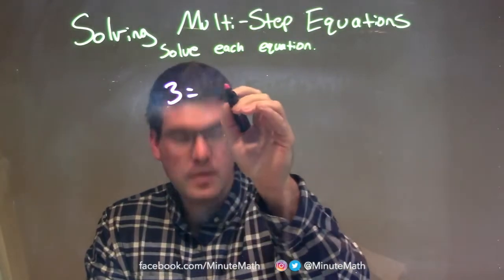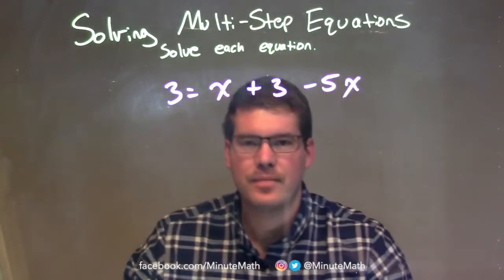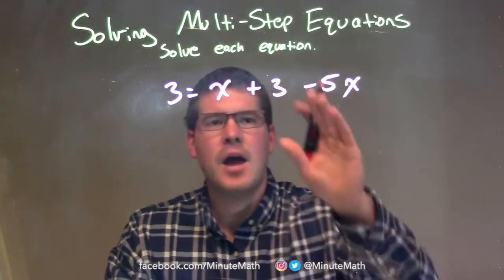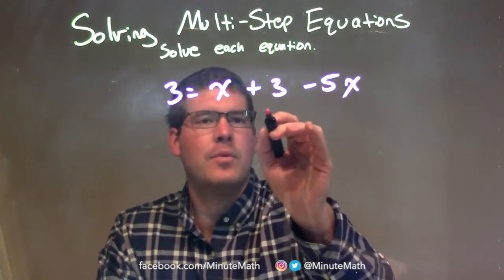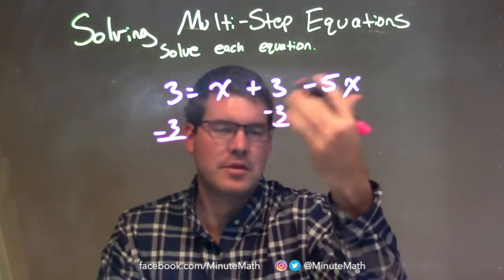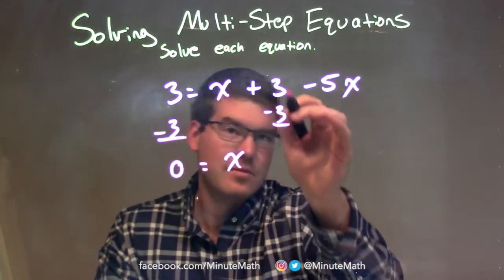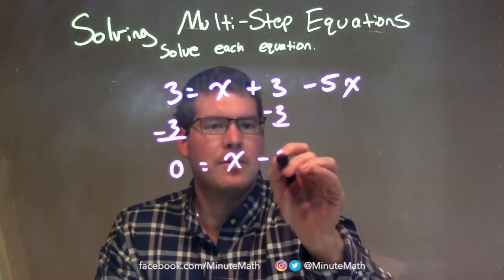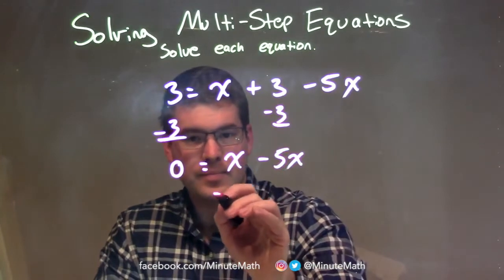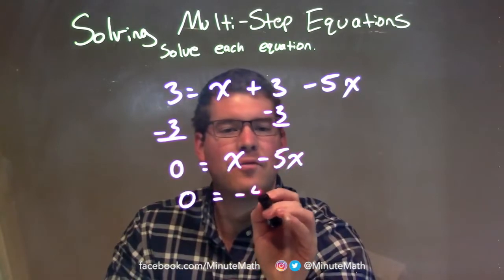3 equals x plus 3 minus 5x. What I want to do is get all my numbers to one side and all my variables to the other. I'm going to subtract 3 from both sides — that's the only number on the right-hand side. Opposite of addition is subtraction: 3 minus 3 is 0, so we have 0 equals x. Then 0 minus 5x. Now I'm going to combine my like terms on the right: x minus 5x is negative 4x.